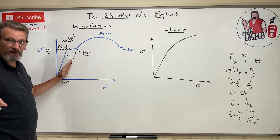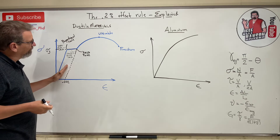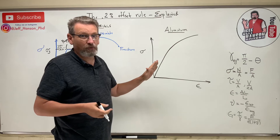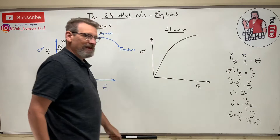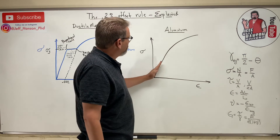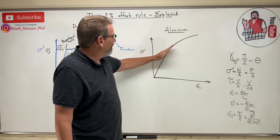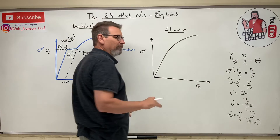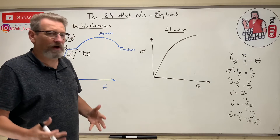That 0.2% offset rule allows us to identify where the yield point of the material is, because it's very hard to determine otherwise. Now, what about a material that's not ductile — something more brittle, like aluminum? It has a yield point too. Here's the elastic portion, but it's really hard to tell where it's elastic and where it starts to curve.